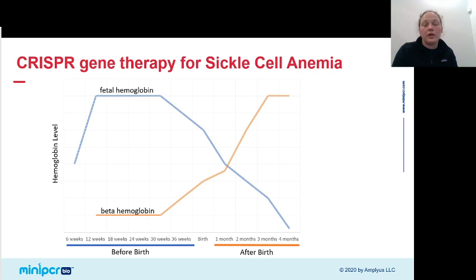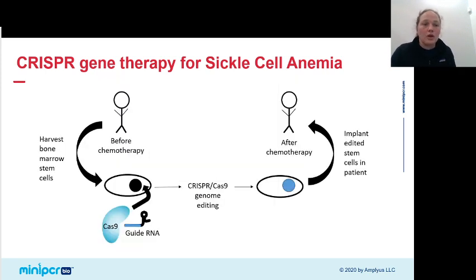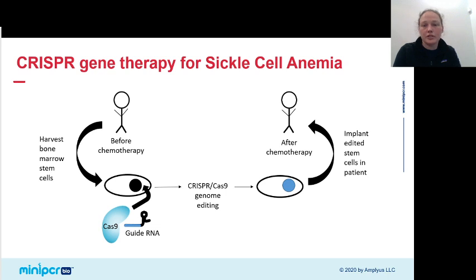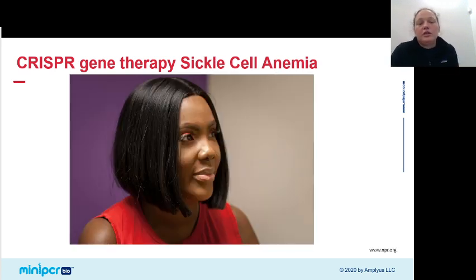This can actually treat patients and give them more functional hemoglobin in their body. We take a sickle cell patient, harvest their bone marrow stem cells, grow them in the lab, and add the CRISPR components — Cas9 and a guide RNA targeting the gene that turns off fetal hemoglobin. Once we've knocked out that gene, fetal hemoglobin starts to become expressed in these cells. In the meantime, the patient undergoes chemotherapy to destroy their existing bone marrow. And then we implant these hematopoietic stem cells back into the patient, replacing their bone marrow with edited cells.